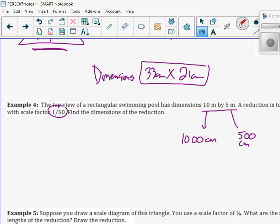We're going to take the length. This is the reduction. That's going to be 1000, because it's the longer one, times it by 1/50, one divided by 50 on my calculator. And I get 20 centimeters.